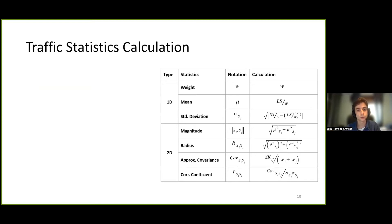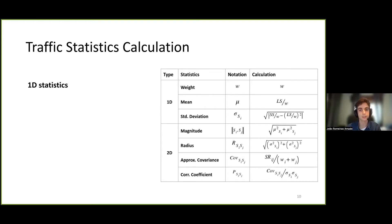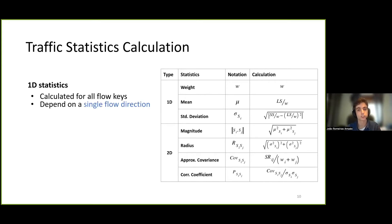From these counters, we calculate a range of different statistics, as shown on the table on the right. Across the four flowkeys, these statistics aim to capture an overall snapshot of each host's behavior in the network with regards to bandwidth and packet rates. These statistics are of two types. The first type is calculated for all four flowkeys and depends on a single flow direction, which is the direction corresponding to the current packet.